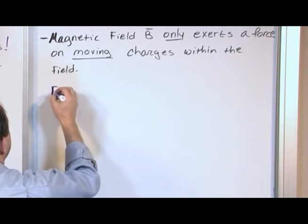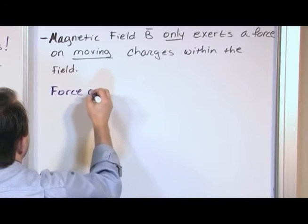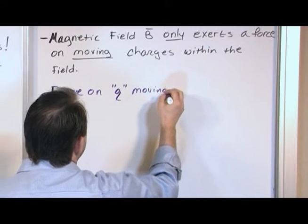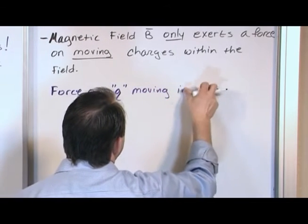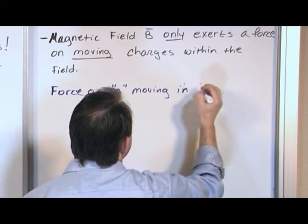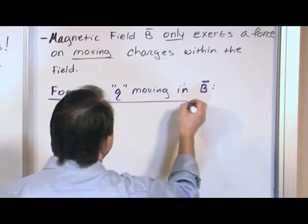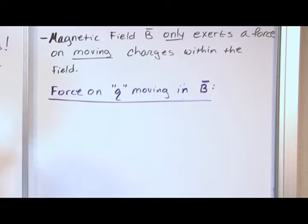The force on a charge Q moving, because it has to be moving, remember, in a magnetic field, not M, in a magnetic field B. That's what we're writing down here. What is the force acting on this charge moving in a magnetic field B?